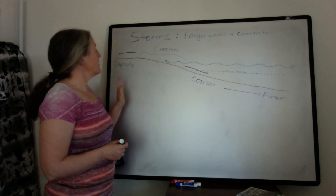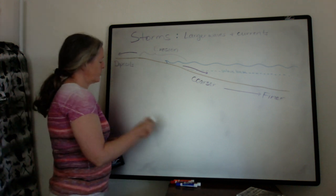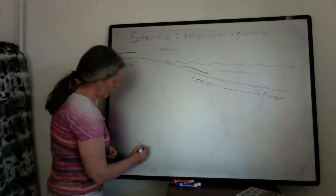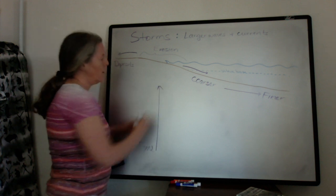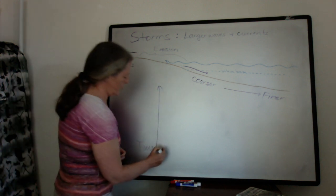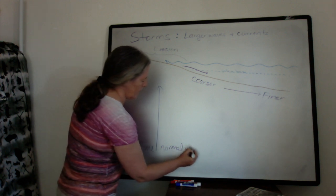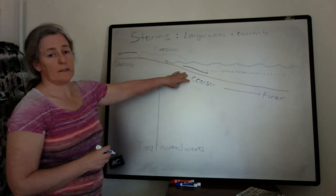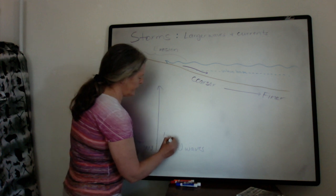If we look at a typical sequence of what happens in a storm through time, usually the wave size increases. Usually the wave size increases before you get the current, so you end up with larger waves.